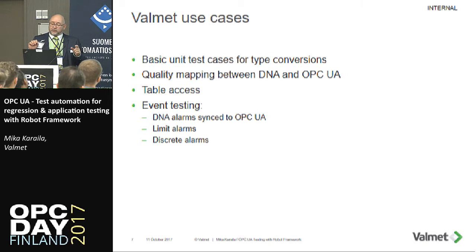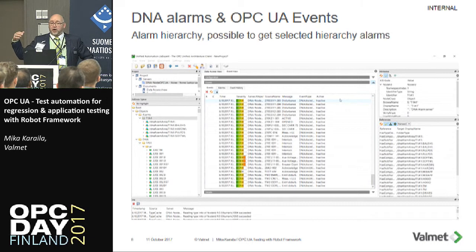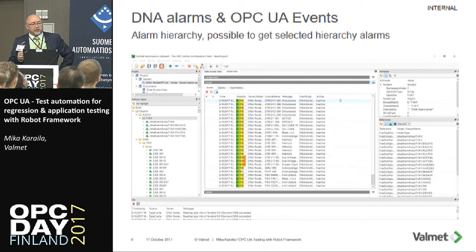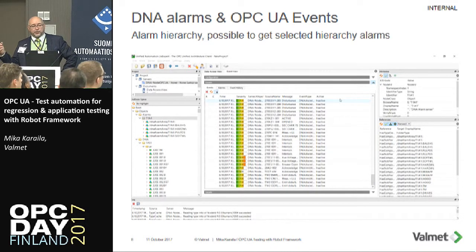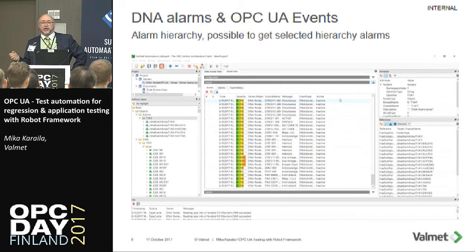We have cases for limit alarms and discrete alarms. We have DNA alarms coming in and then we use OPC UA events. There is an alarm hierarchy — you have an alarm station, alarm server, and then you can have hierarchical different kinds of process areas or alarm areas giving those alarms. I actually exposed that to OPC UA alarms as their own hierarchies.